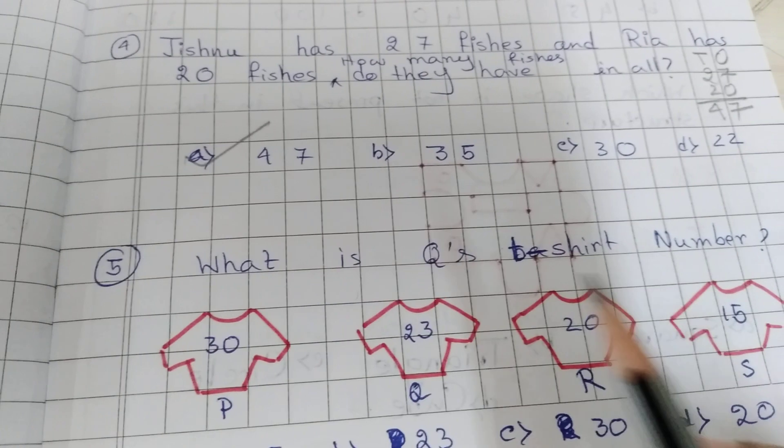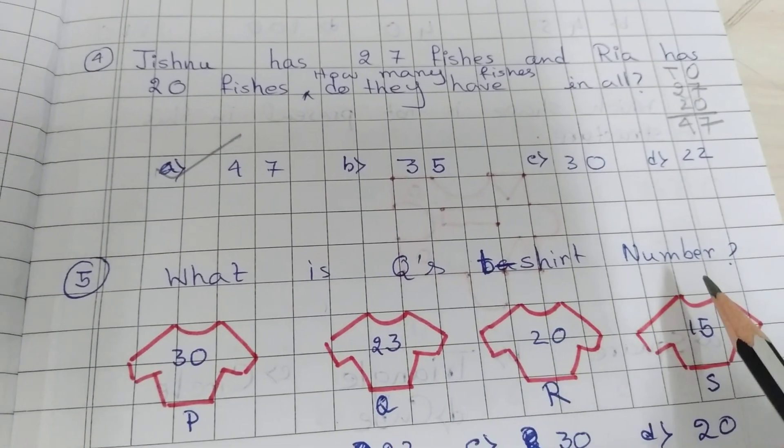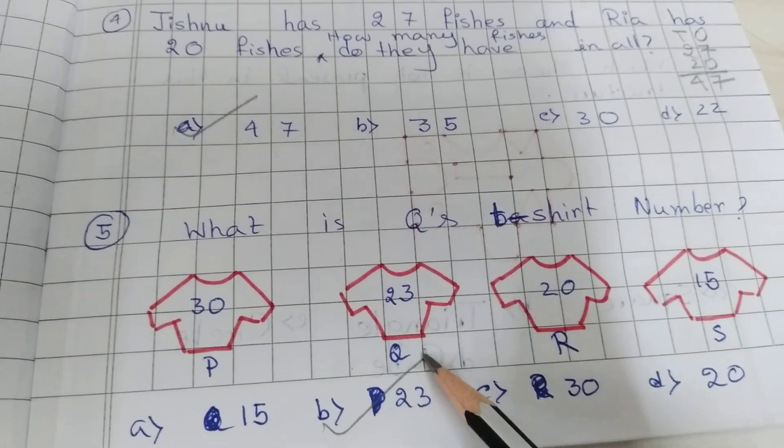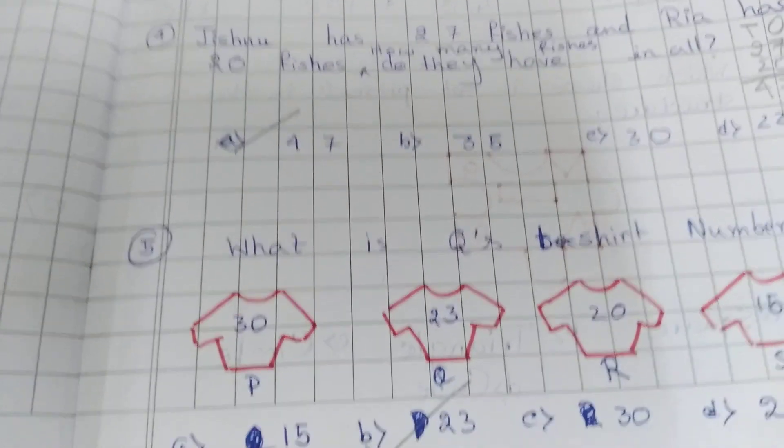What is Q's T-shirt number? PQ. Q T-shirt number is 23. So option B is correct.